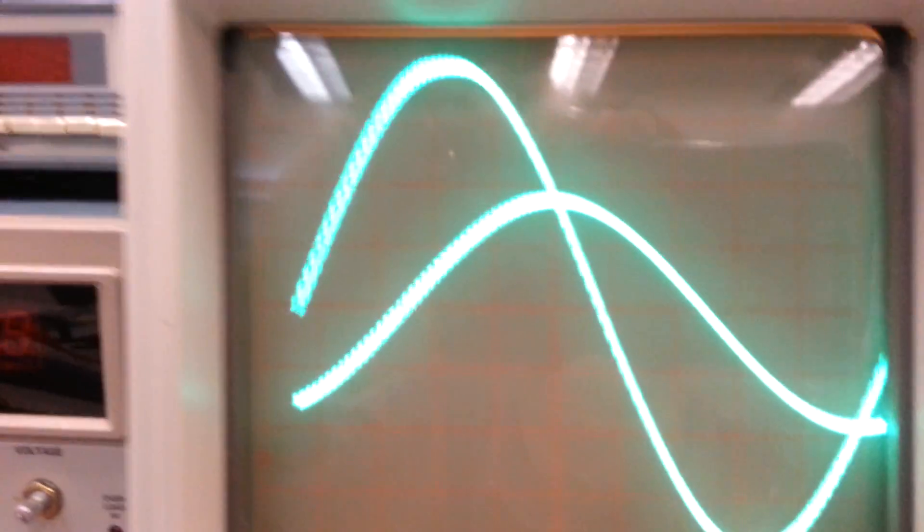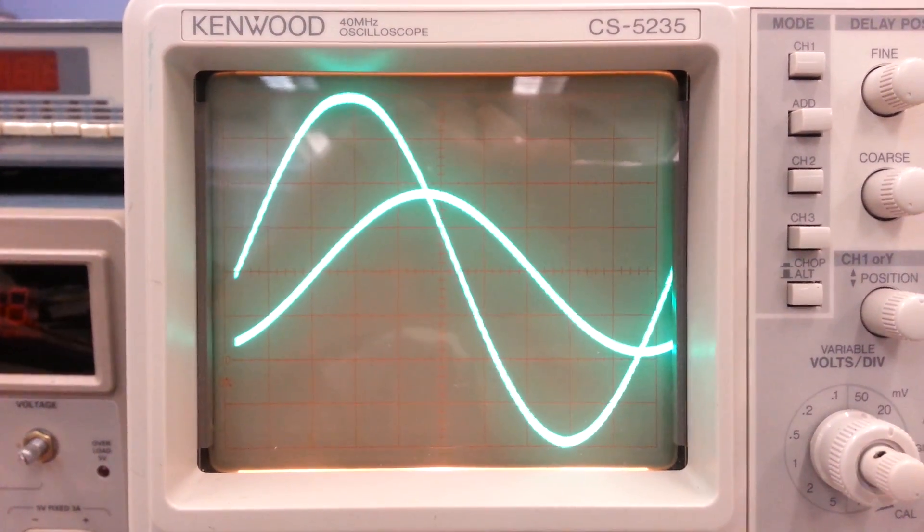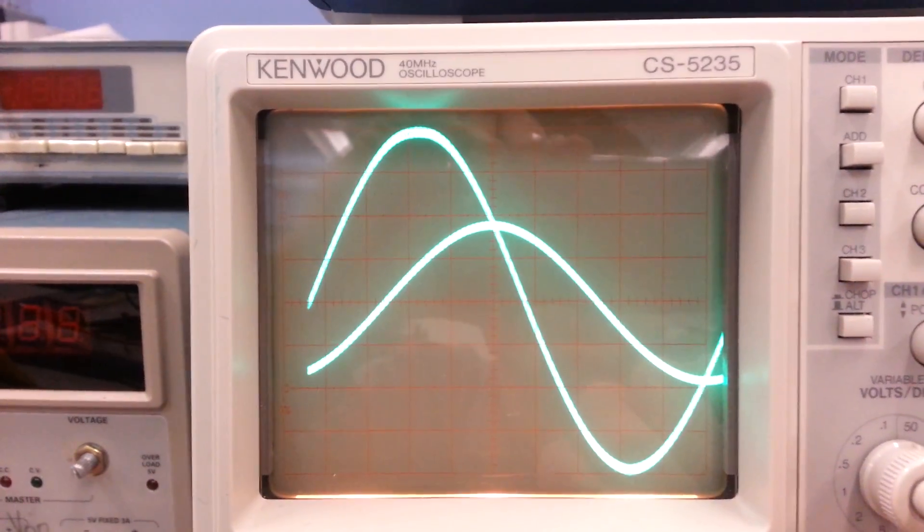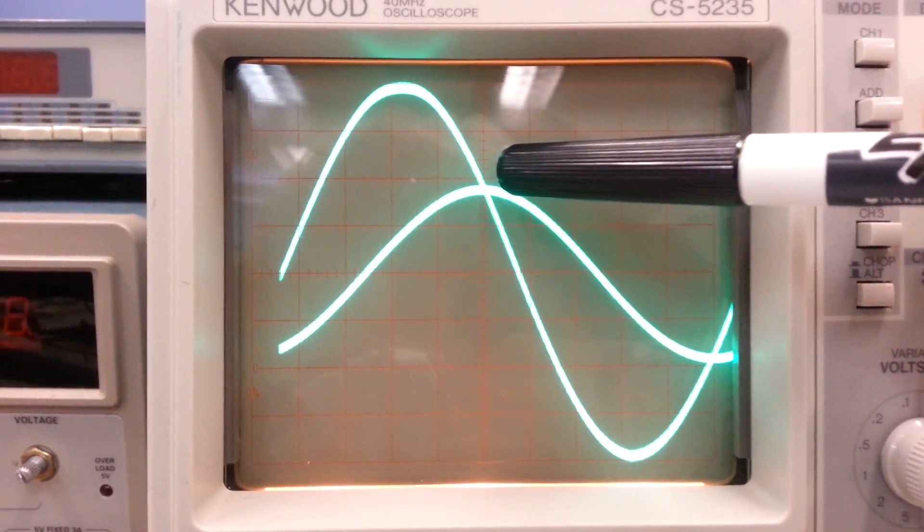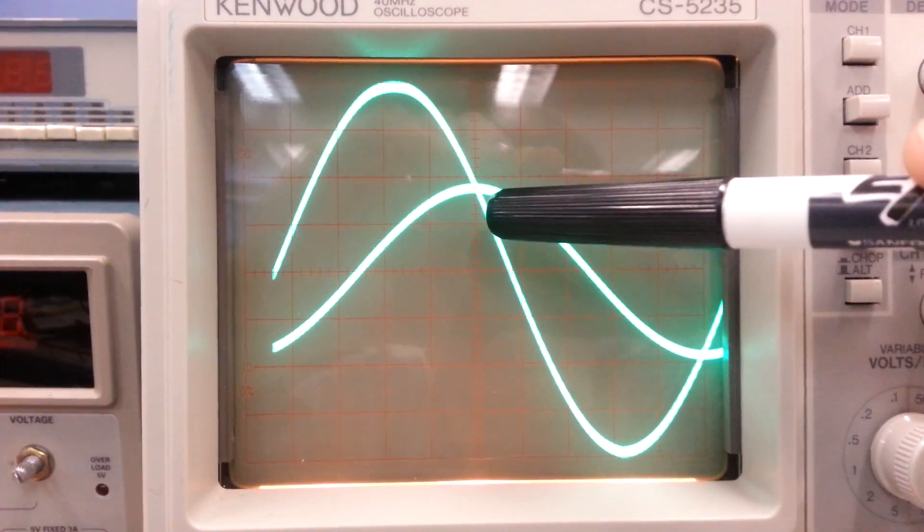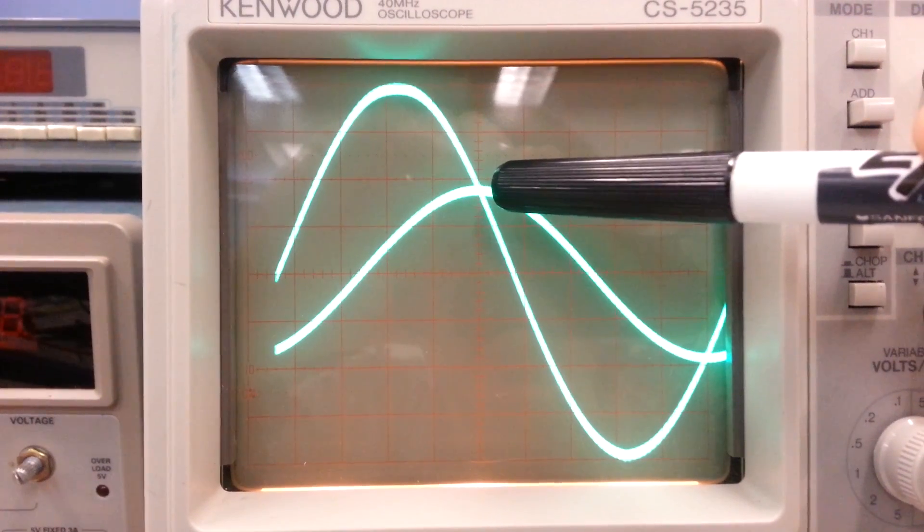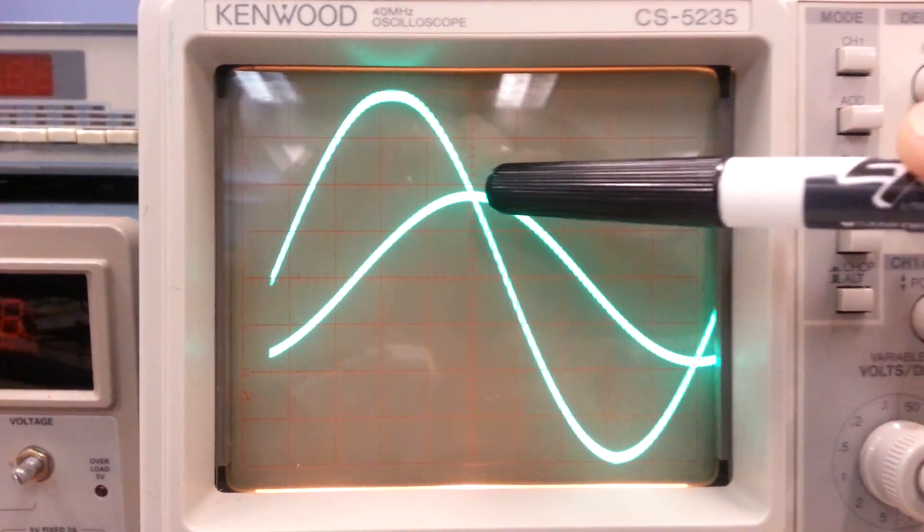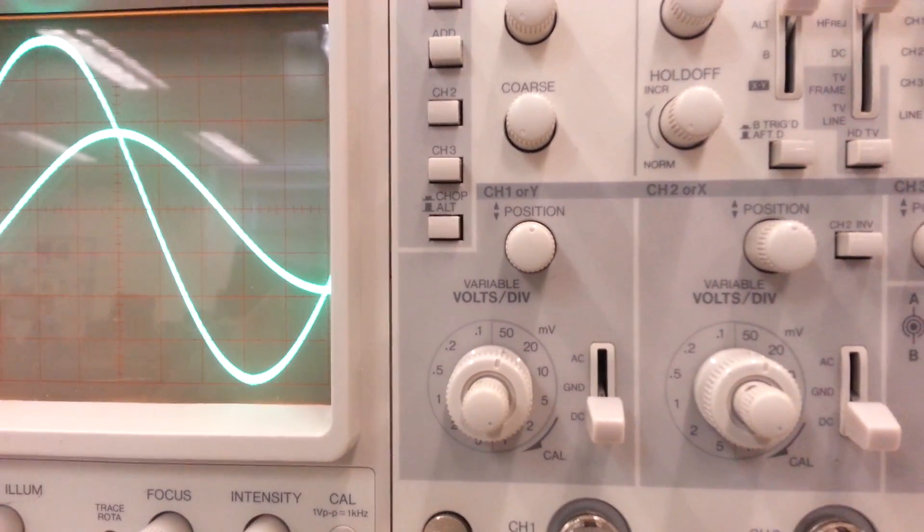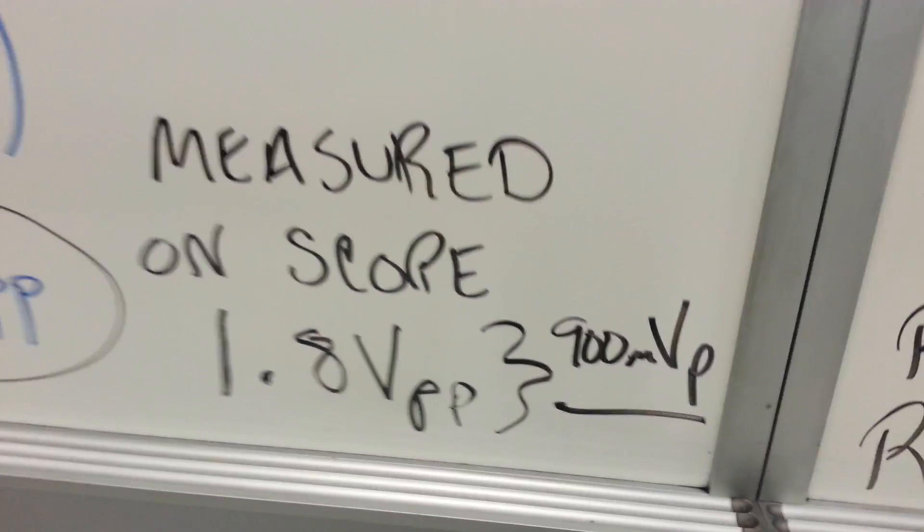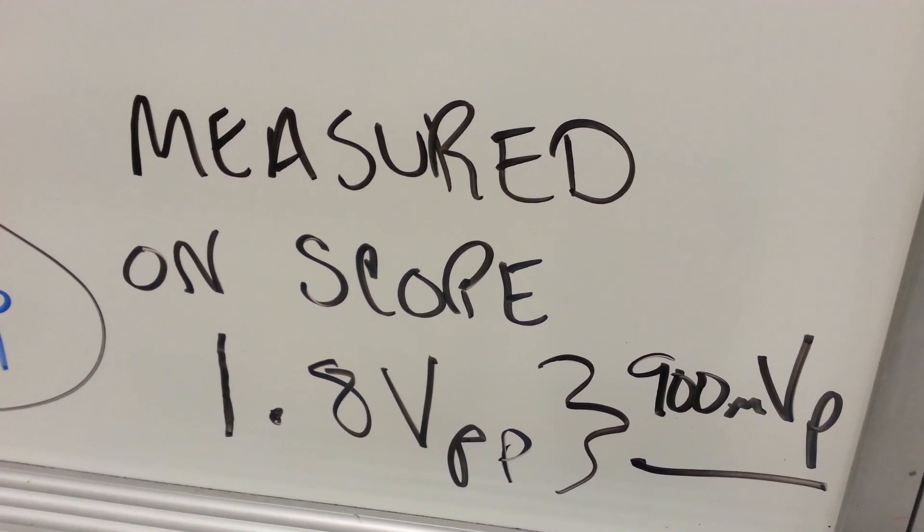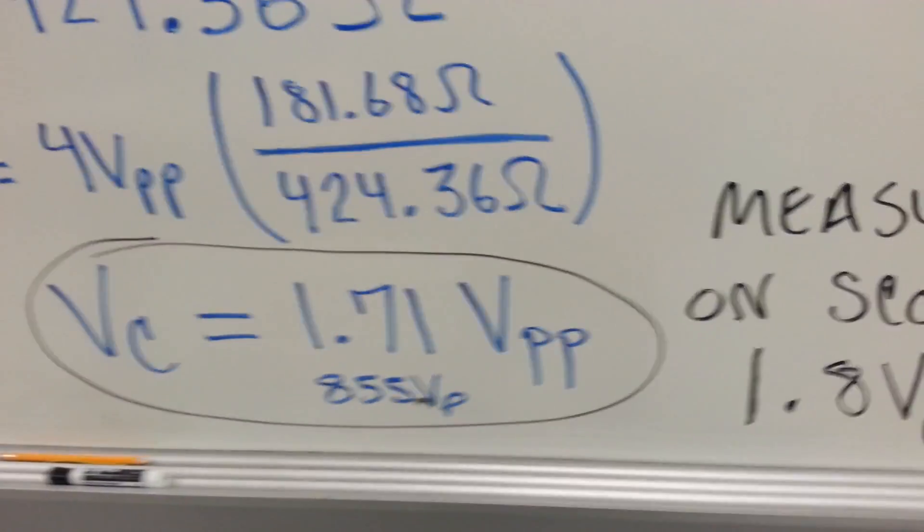And let's see the voltage across the capacitor. The voltage across the capacitor is going from a center ground, one division. It's not quite two divisions. It's 1.2, 0.4, 0.6. It's about 1.8. 1.8 divisions times 500 millivolts per division gives me about 900 millivolts peak. And that's really close to what I expected.